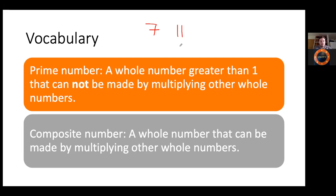Any number that cannot be produced by multiplying two numbers together is a prime number. A composite number is the exact opposite — it's a whole number that can be made by multiplying other whole numbers. For example, six is composite because you can divide it by three or two. Ten is also composite — you can divide it by five or two. Those are factors other than itself and one.